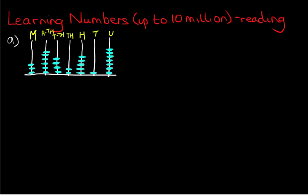Now we're going to count each of the disks and work out what number it is. We're going to start with the units: one, two, three, four, five, six, seven. There are seven disks. On the tens, there's only one disk. How about the hundreds? We've got one, two, three, four, five. There are five hundreds.